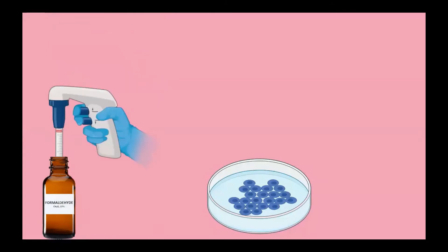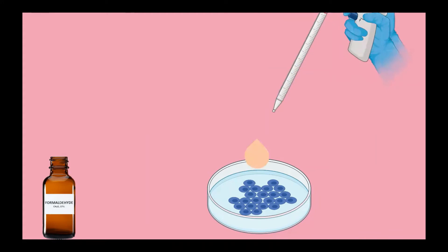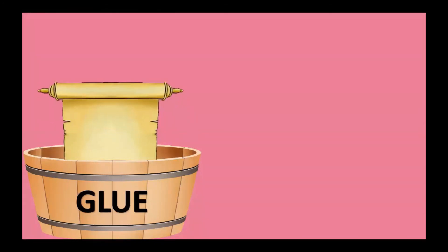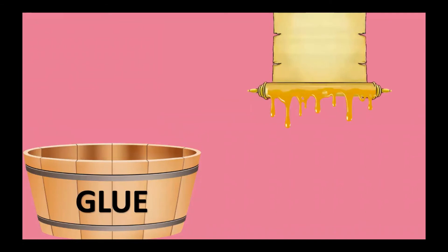The first step is to treat the cells or DNA of interest with formaldehyde. Formaldehyde is a cross-linking agent that binds protein and DNA together. It stabilizes the interactions between protein and DNA but does not act significantly on naked DNA. Going back to our scroll analogy, this would be like dipping each paper-wrapped wooden rod in a bucket of glue, leaving the paper itself unaffected.